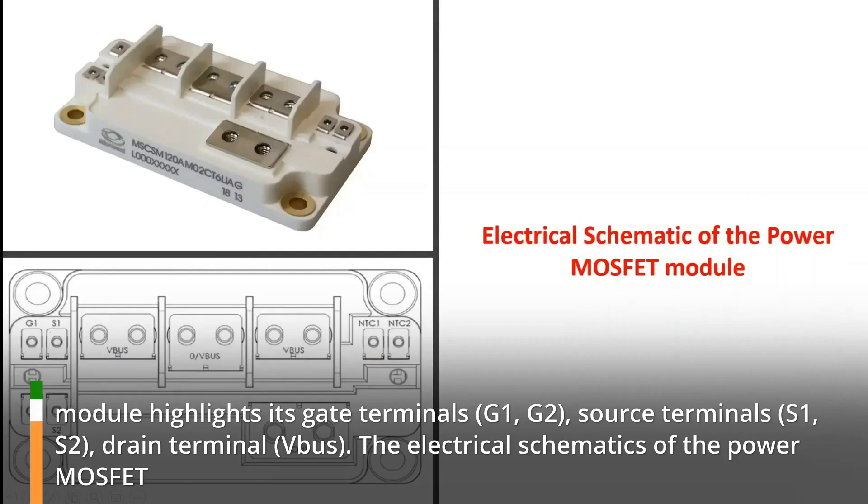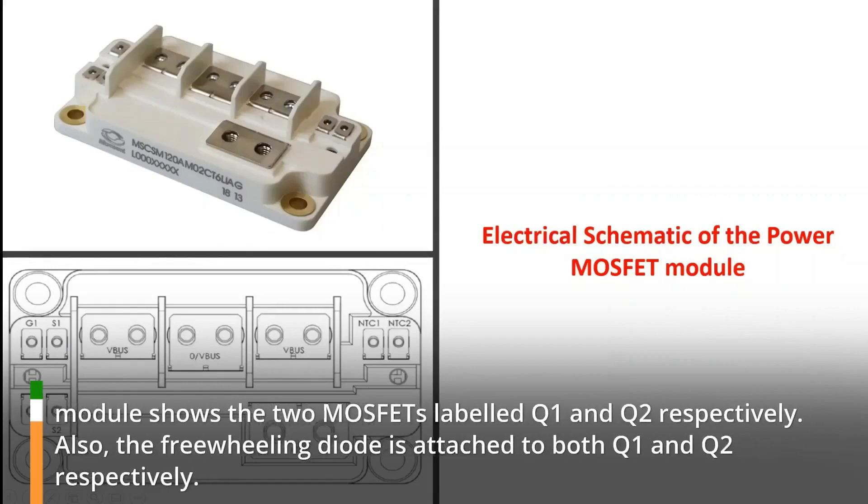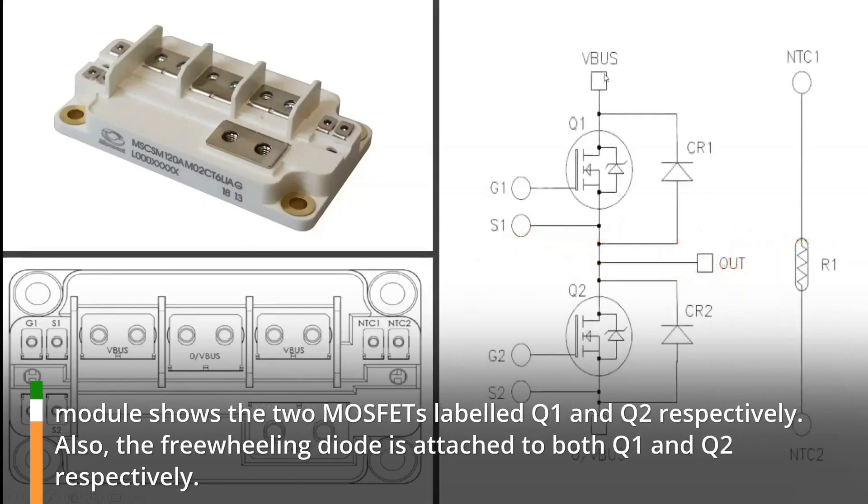The electrical schematics of the power MOSFET module shows the two MOSFETs labeled Q1 and Q2 respectively. Also, the freewheeling diode is attached to both Q1 and Q2 respectively.